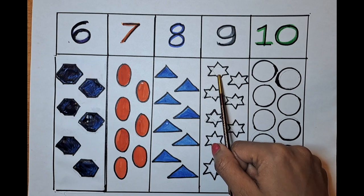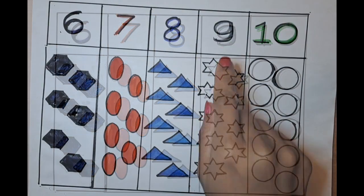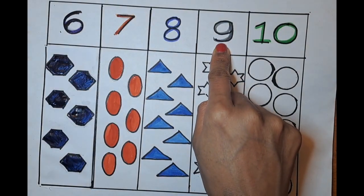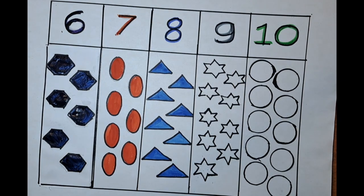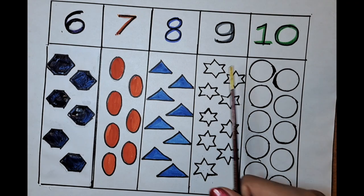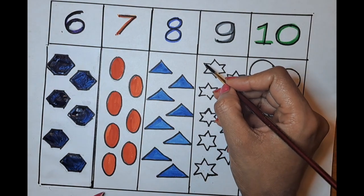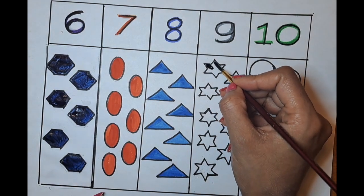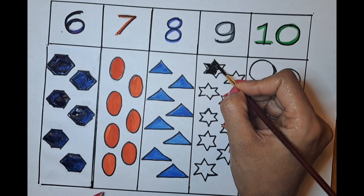It's a star! What is this next number? It's nine. It's a black color. Can we color the stars with the black color? Let's do the stars with the black color. One,